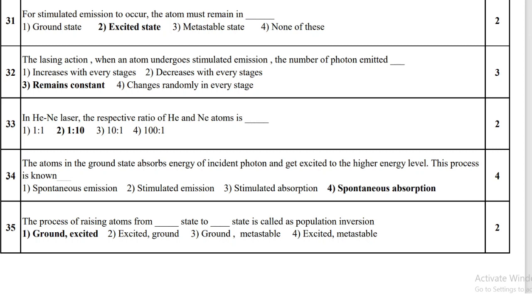The process of raising atoms from the ground state to the excited state is called population inversion. This is all about Chapter 3. Thank you.